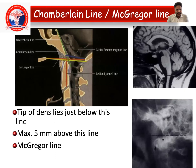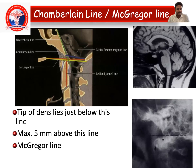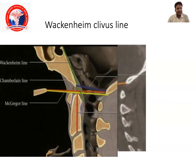The Chamberlain or McGregor line runs from the base of the clivus to the tip of the dens. The tip of the dens lies just below this line; a maximum of 5 mm above this line is considered normal, and more than 5 mm is abnormal. The Wackenheim-Clivus line runs along the clivus as well.